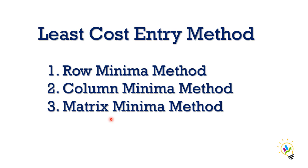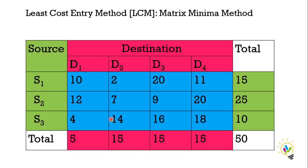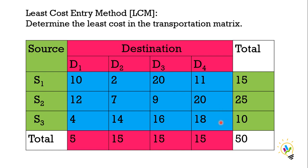Least cost entry method has three methods: row minima method, column minima method, and matrix minima method. In this case, we are using matrix minima method. What is matrix minima method? In the cost values we have in blue color, we must consider the least value only. First, we must select the least value and allocate the material.